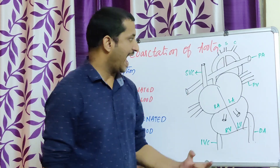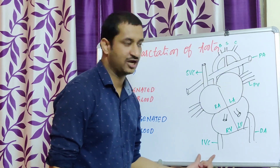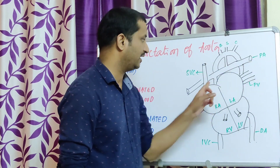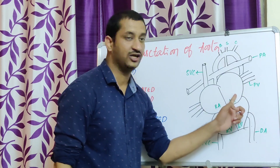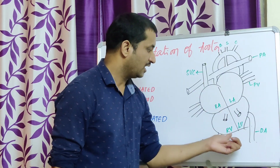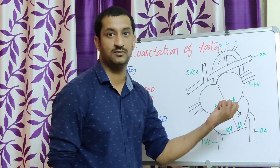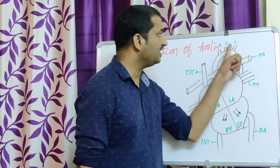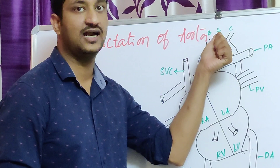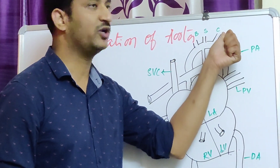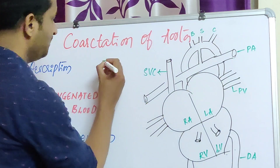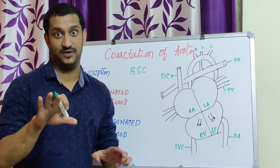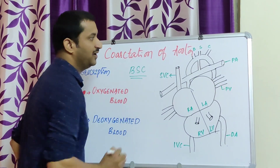Coming to the structure, as you know, this is the superior vena cava, this is the inferior vena cava, this is the descending aorta, this is the pulmonary artery — particularly left pulmonary artery and right pulmonary artery — right atrium, left atrium, which are called pumping chambers. The special feature here is your BSC arteries: brachiocephalic artery, subclavian artery, and carotid artery. The mnemonic is very easy to remember — BSC. You are already a BSC nursing student, so it is very easy to remember these three.